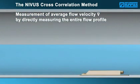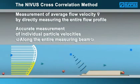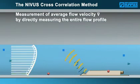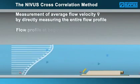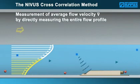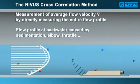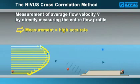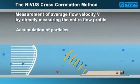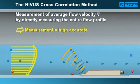The discrete flow velocities related to the flow level, covering the complete measuring beam, ensure high, accurate flow metering. The sensor even detects flow profile changes due to events such as rainfall, and the measurement remains highly accurate. The measurement results remain highly accurate even in case of backwater formation caused by obstacles such as sedimentation, elbows or throttle equipment. Even accumulation of particles within the medium has no effect on the measurement — the measurement remains highly accurate.